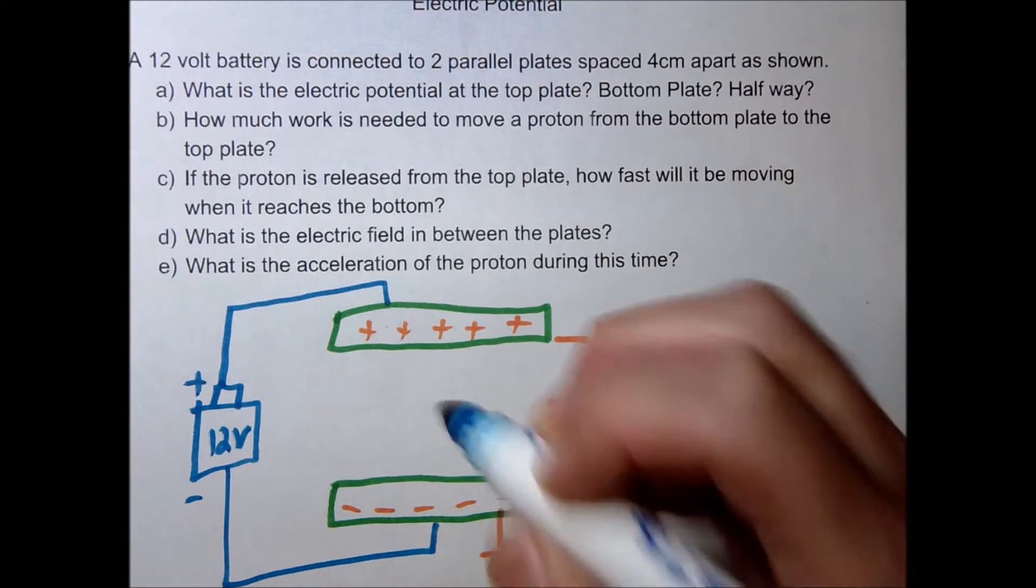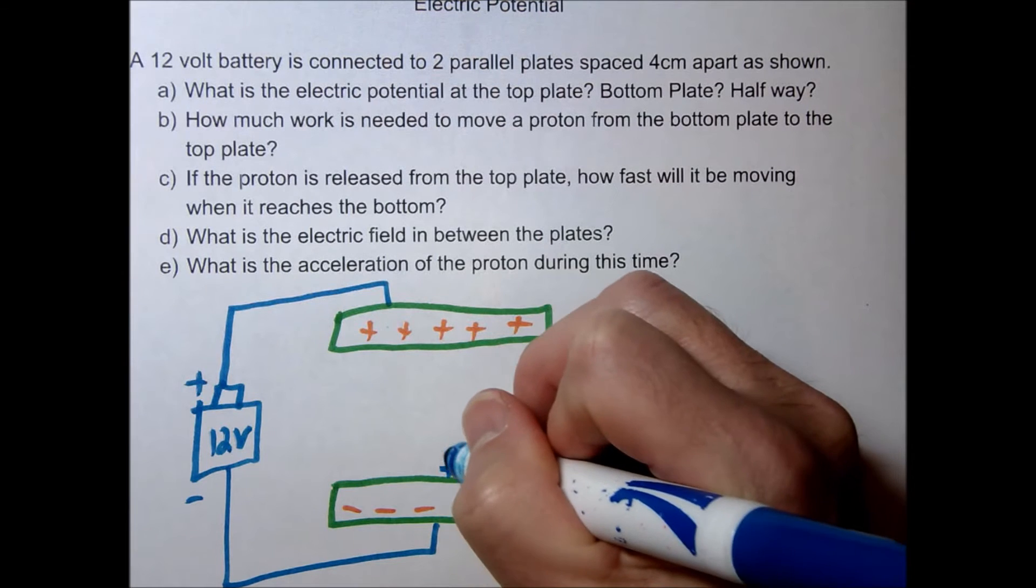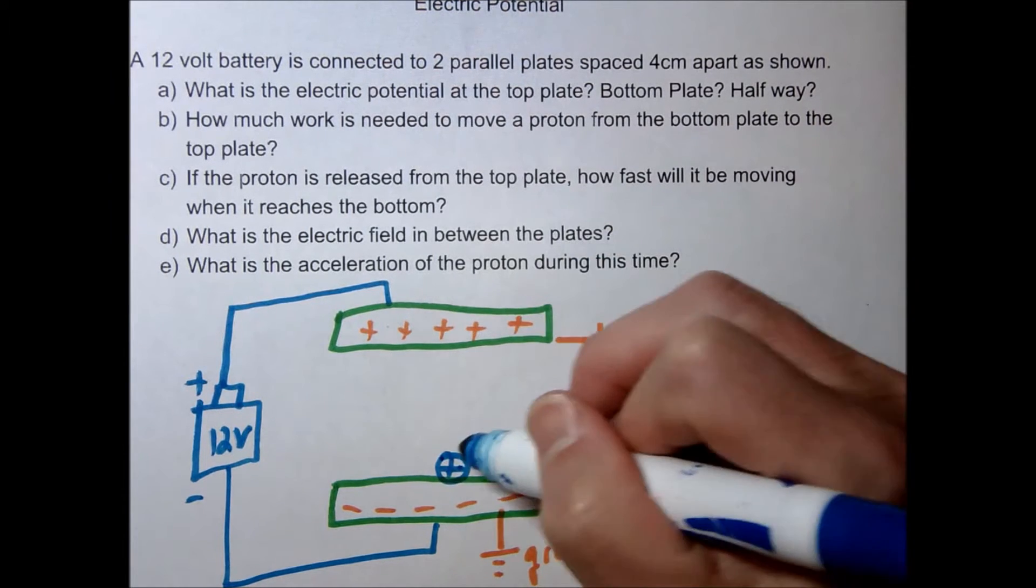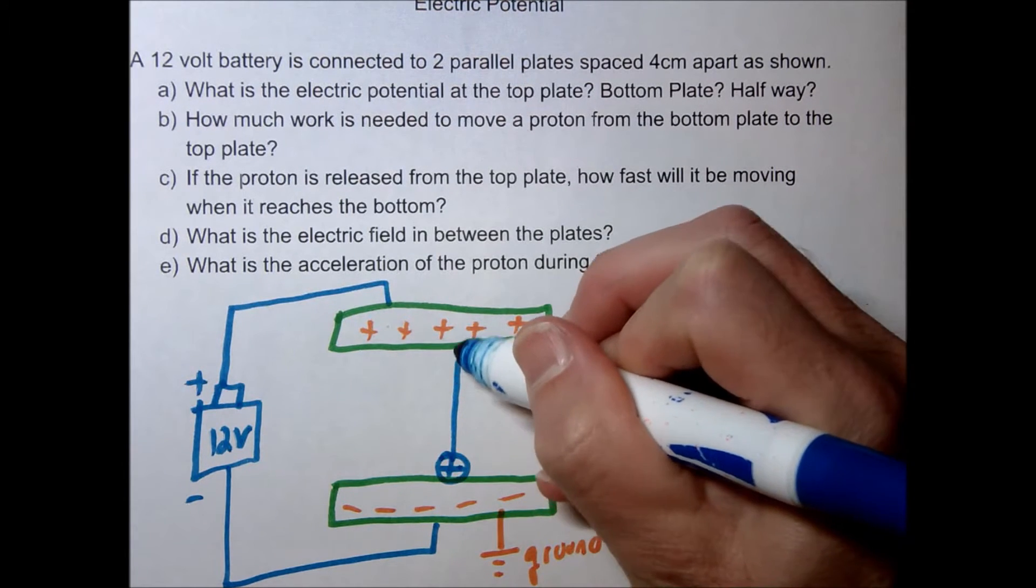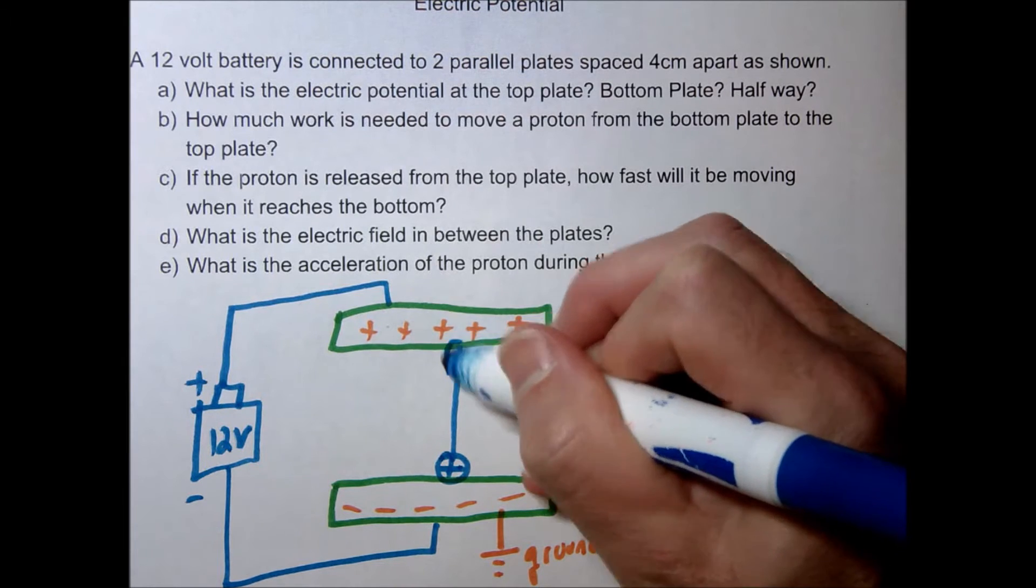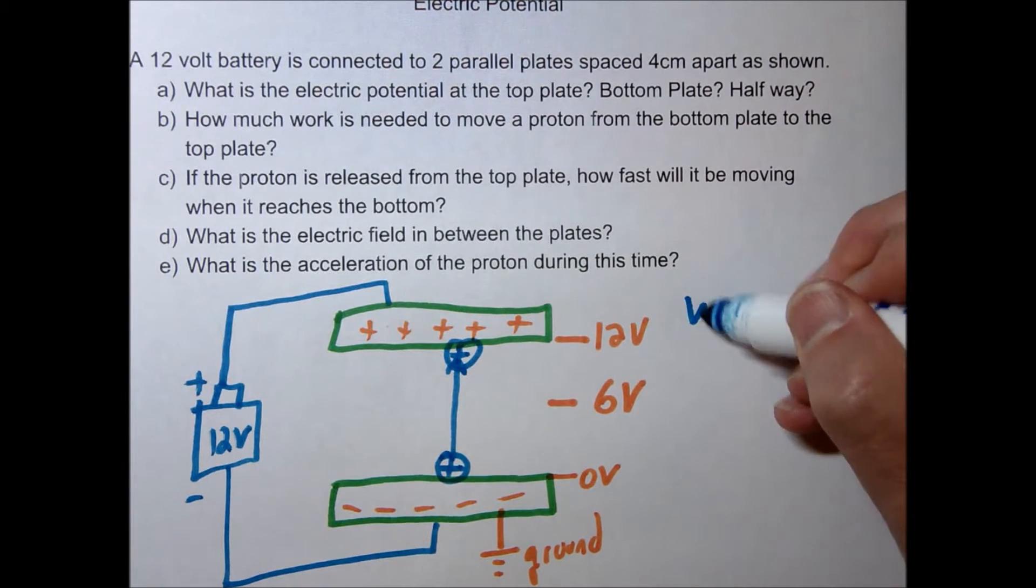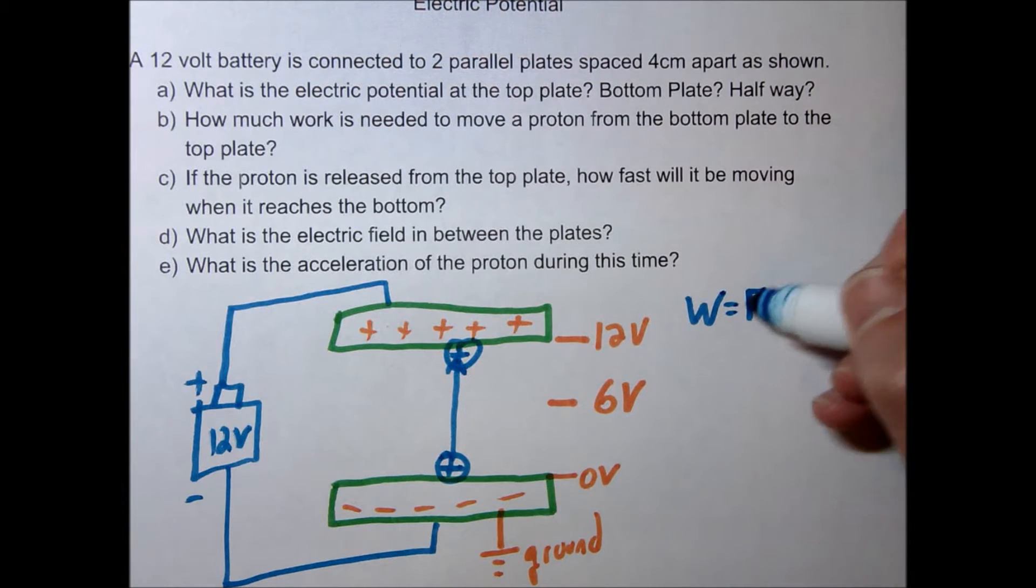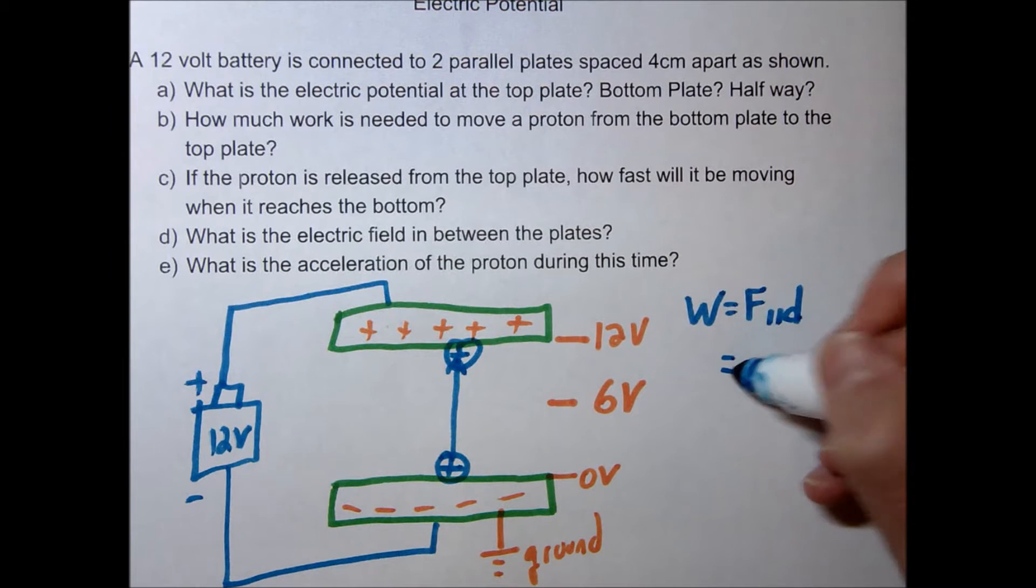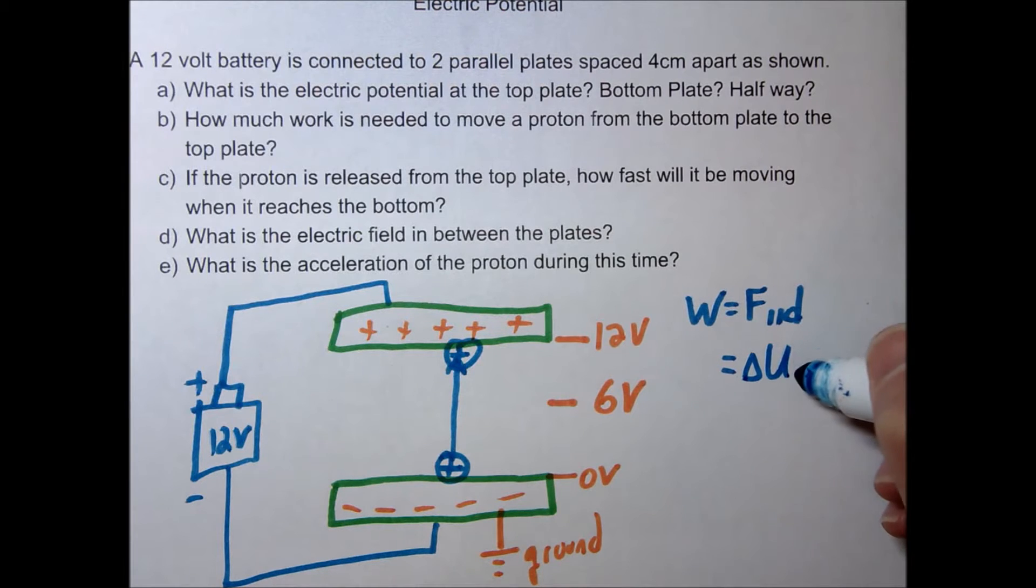Question B says we're going to go ahead and place a proton at the bottom plate, move it up to the top plate. We want to know how much work is needed to do this. So there's a couple of ways we could do it. Remember work is equal to force parallel to distance. The other thing we can do is say the work it takes to move it up here is going to be equal to the change in the electric potential energy. And I think in the case of this problem, this would be an easier way to go.